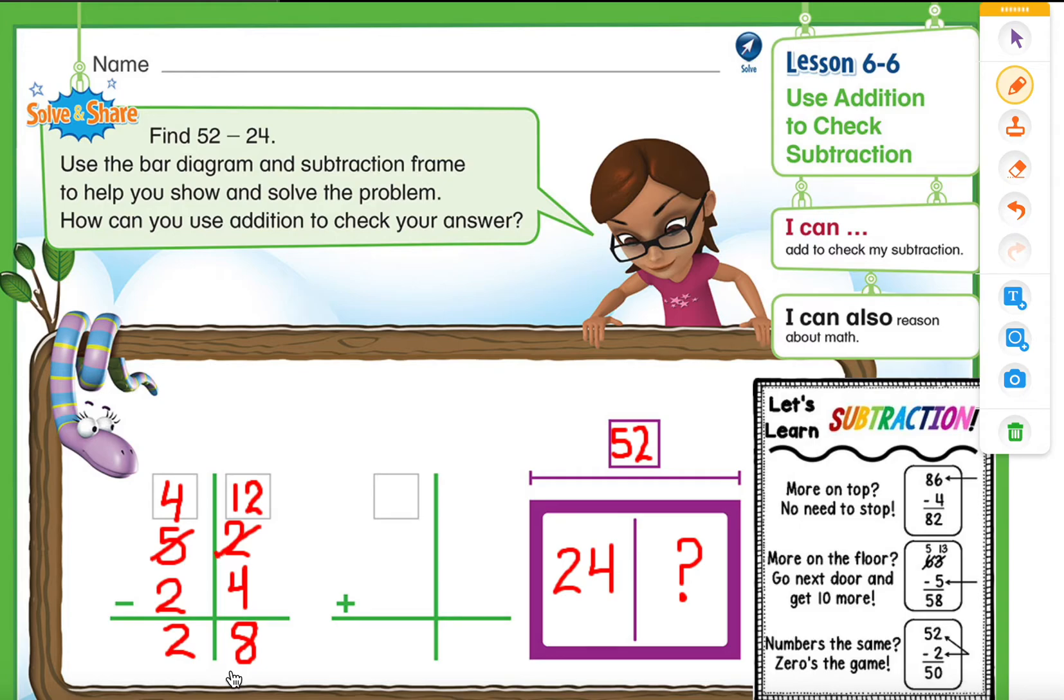Now we need to see whether our subtraction is correct or not. So what we are going to do, we are going to use addition to check our answer. So in our addition, if we add part and part and get a whole, that shows that we got a correct answer. So let's line up our numbers. Subtraction and addition are interrelated. So as we read in the fact family,